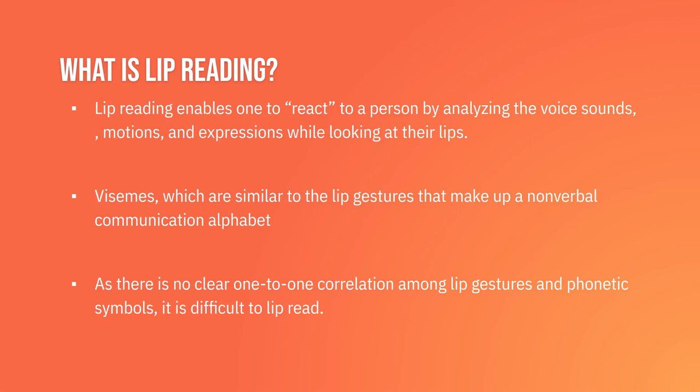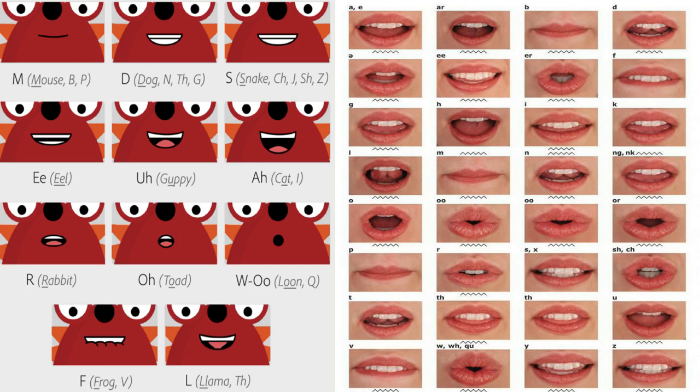I wanted to talk more about visemes, which are basically the lip gestures that make up the alphabet of nonverbal communication. As shown in the next slide, there's not really a one-to-one correlation — unlike the alphabet A through Z. For example, P and B could be mixed up; they might have the same mouth movements or facial expressions. What I'm basically saying is that multiple sounds can have the same shape.